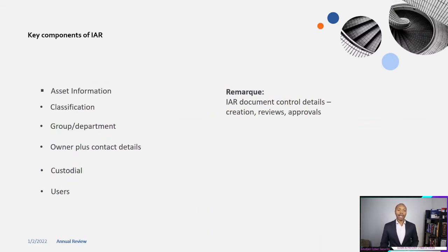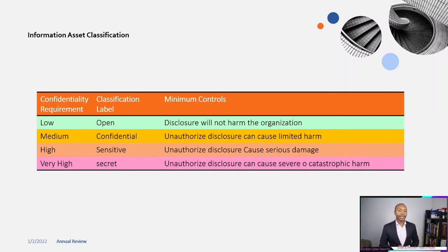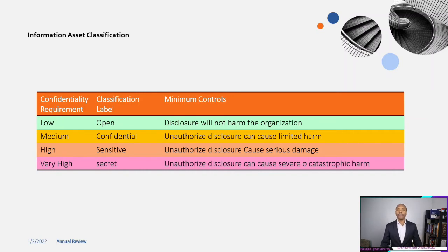There are key components of an information asset, such as asset information, classification, group, department, and who is responsible for working on this project — the owner of the asset, the custodian, and the user. When working on an information asset, you have to classify your asset. For this project, we selected the classification labels used by the government entities.